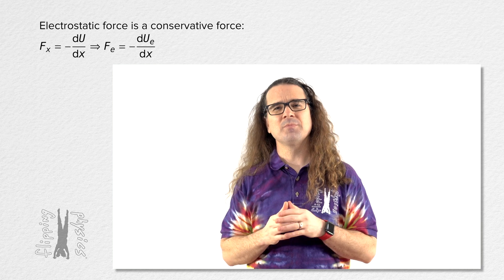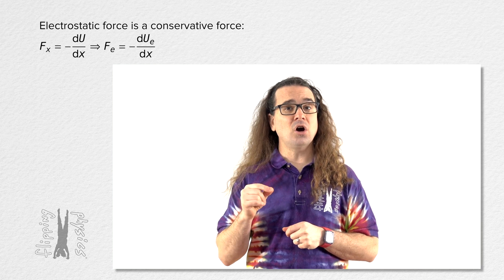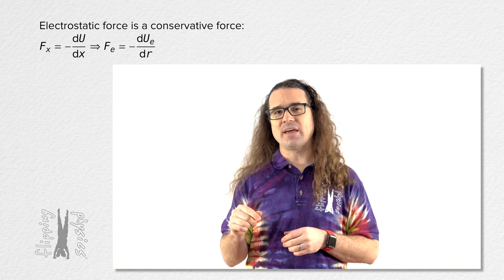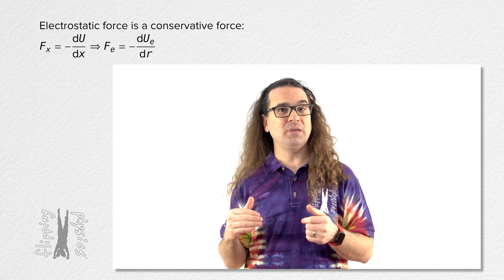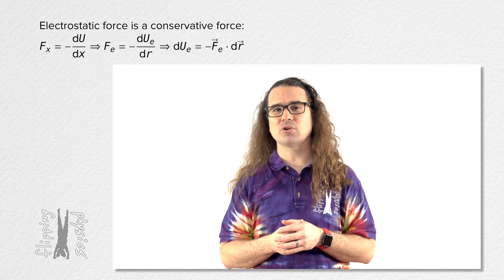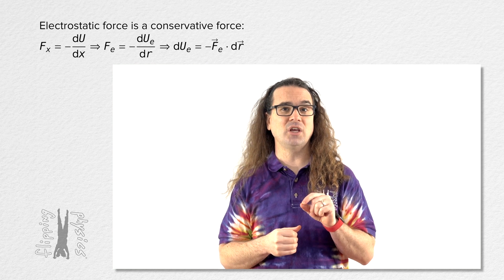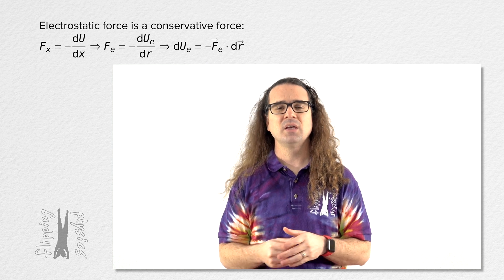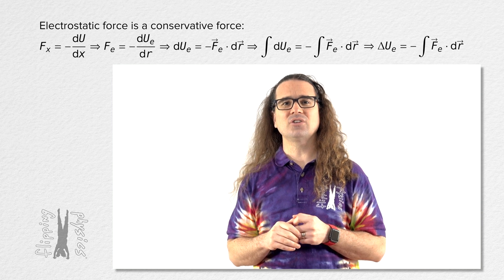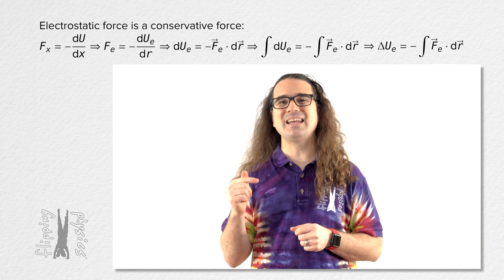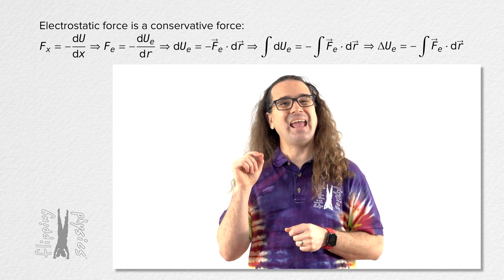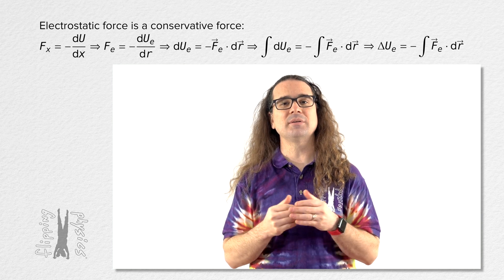Let's use the more general r variable to identify it could be any direction. We can rearrange that equation — because it has to be the force in the direction we are taking the derivative — this is actually the dot product of the force and the infinitesimally small change in position dr. Take the integral of both sides and we get that the change in electric potential energy of an object equals the negative of the integral of the dot product of the electrostatic force acting on the object and the infinitesimally small displacement dr.